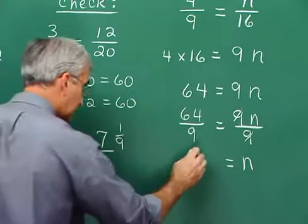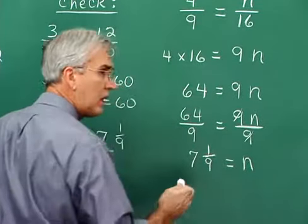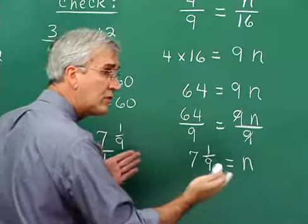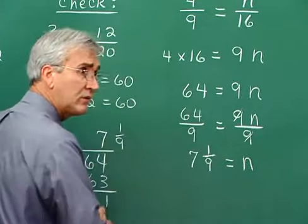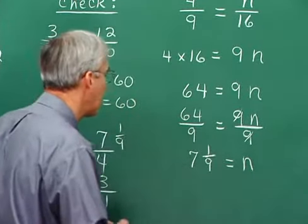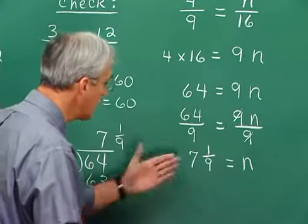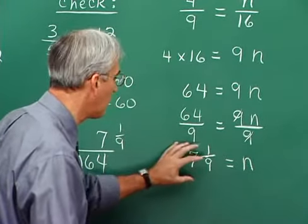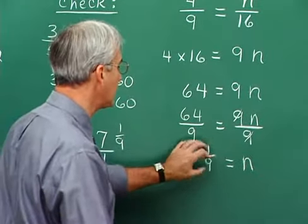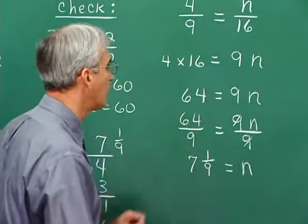The answer is 7 and 1 ninth. Sometimes the nature of the problem dictates whether you use a mixed number or convert to a decimal rounded to a certain position. If there are no instructions in that regard, it doesn't make any difference — and this is a very exact value for n. We could go through checking this by replacing n with the value found and verifying that we have a true proportion.